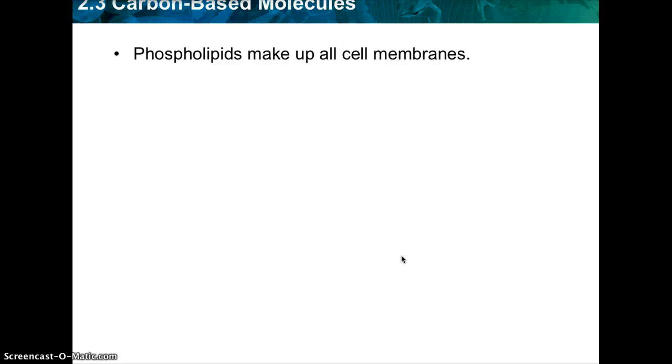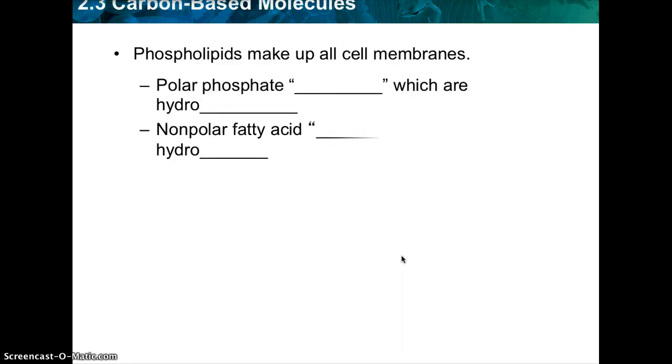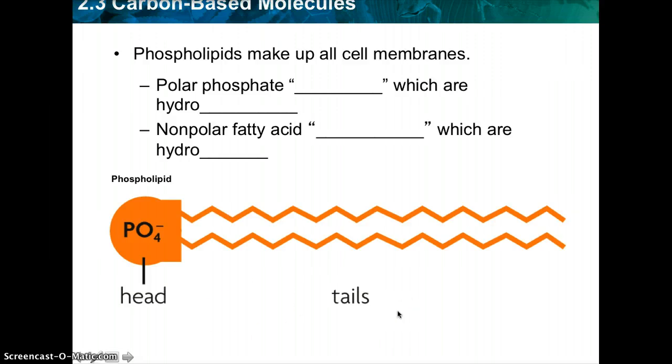So on to my favorite part of the cell membrane, phospholipids. It's basically made up of two parts: the head and the tail. So the polar phosphate head, which are hydro what? The polar heads are hydrophilic, meaning they love water. The nonpolar fatty acid tails are considered hydrophobic, meaning they hate water. So you have the polar phosphate heads, the nonpolar fatty acid tails. You have the hydrophilic heads and the hydrophobic tails.